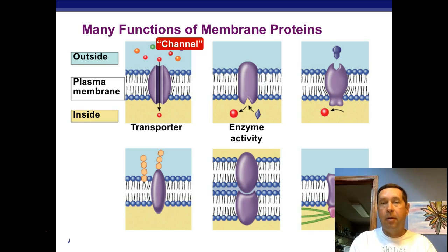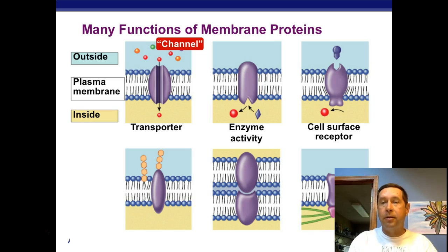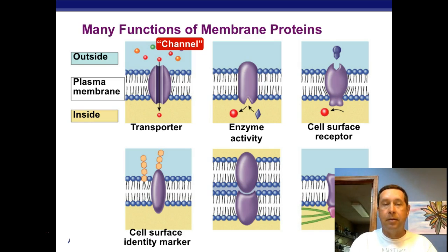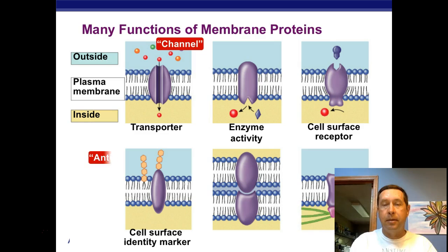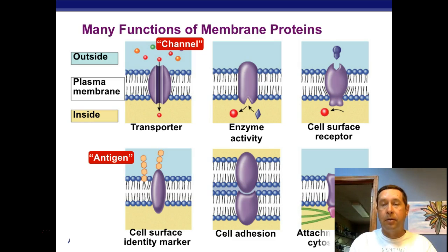There are proteins with enzymatic functions that allow chemical reactions to occur at the cell membrane. There are cell surface receptors involved in cell communication — we'll talk more about those later. There are cell surface identity markers such as glycoproteins and glycolipids, antigens, and cell adhesion proteins that function in cell-to-cell junctions. There are also attachments to the cytoskeleton.